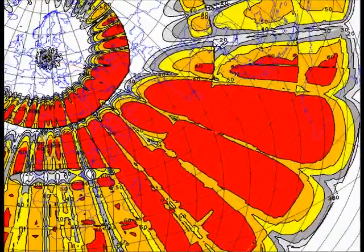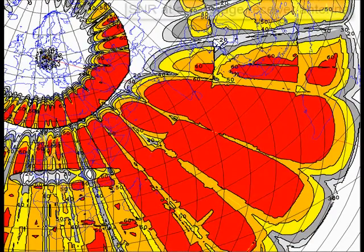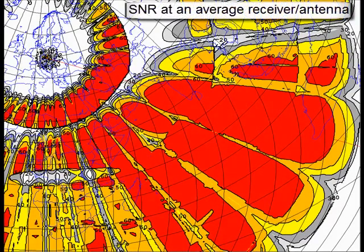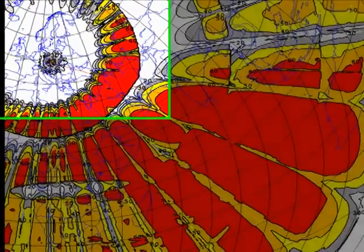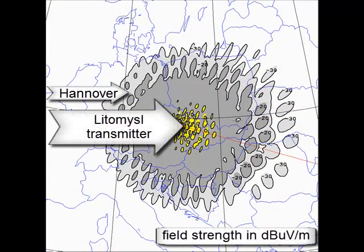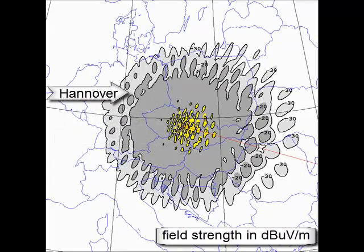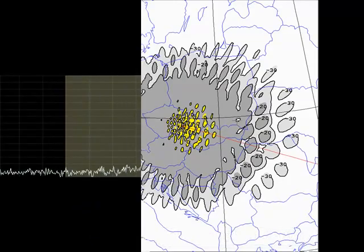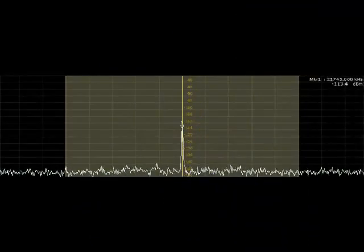For a better view, we switch over to Radio Prague on 21.745 MHz with a transmission to South Asia in the morning. Here you see the antenna diagram of the rhombic antenna which leaves a bit of backscatter, and we will use that backscatter. In Hanover, we are in the dead zone regarding the audio of Radio Prague. But thanks to the small bandwidth of the receiver, we can manage to find at least a beat tone of the carrier, which will be enhanced by meteorite trails.